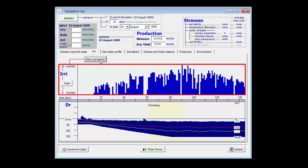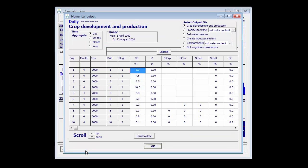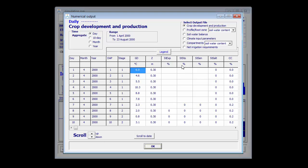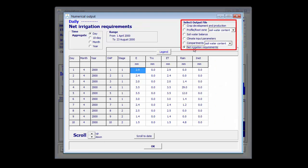But then, throughout the season, the net irrigation requirements are growing. I can see also the daily values of the net irrigation requirements by going here to the numerical output and then request to see the net irrigation requirements.